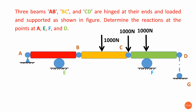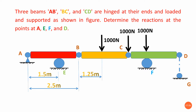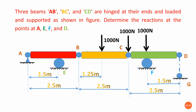We need to determine reactions at A, E, F, and D. I am taking each beam individually — first CD, then BCD, then the full system. If we start with AB, there are too many unknowns. Since known loads of 1000 N each act at points on the CD beam near F, we can calculate reaction forces at F and D first. The dimensional properties: AB is 2.5 m, distance A to E is 1.5 m, distance from B to the 1000 N load on BC is 1.25 m, total BC length is 2.5 m, distance from F to the load and D is 1.5 m, and total CD beam length is 2.5 m.